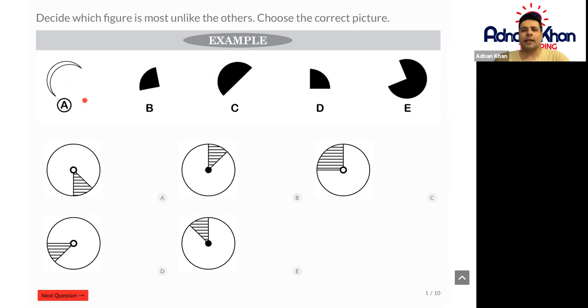Whereas option A here that we can see in front of us is not a particular segment of a circle. It's just a crescent, just like a moon, and also it's white in nature. So A is going to be the odd one out.